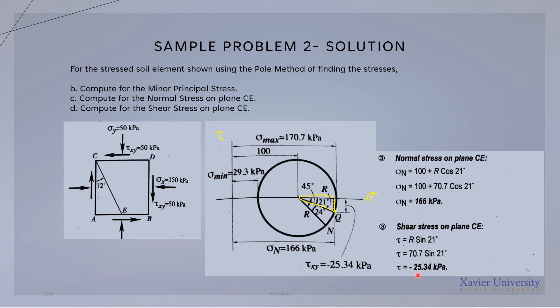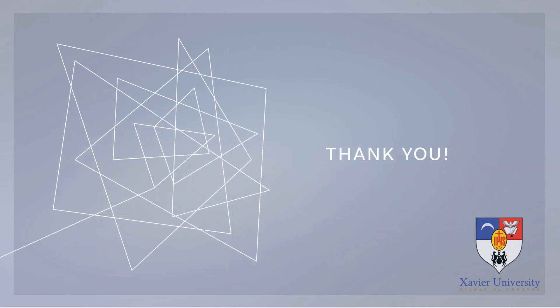The shear stress on plane CE is therefore -25.34 kPa, negative because the point lies in the lower half of the Mohr's Circle, below the origin. That concludes the discussion on stresses in soil mass. Thank you.